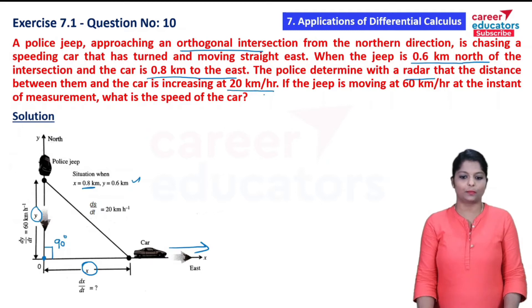The police radar device shows the distance between them and the car is increasing at 20 kilometers per hour, that is ds by dt equal to 20 kilometers per hour. If the jeep is moving at 60 kilometers per hour at the instant of measurement, what is the speed of the car? That is, given dy by dt equals 60 km/hr, find dx by dt.